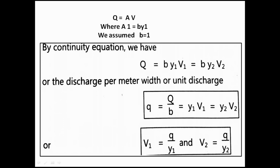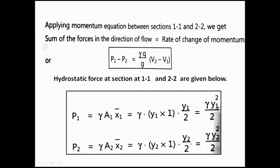By the continuity equation, Q = A·v. With b = 1, the unit discharge (discharge per unit width) is q = y1·v1 = y2·v2. Therefore, v1 = q/y1 and v2 = q/y2. Applying the momentum equation between sections 1-1 and 2-2: P1 − P2 = (γ/g)·q·(v2 − v1), which represents the sum of forces equal to the rate of change of momentum.